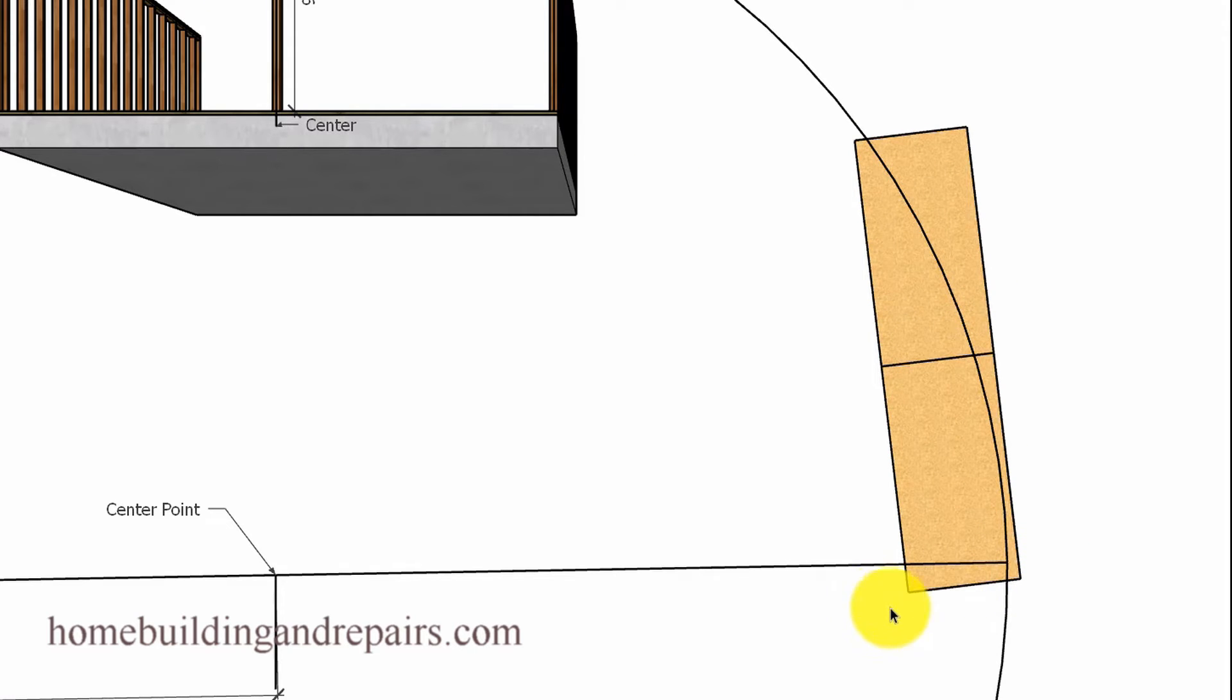The next thing we're going to want to do is hook our tape measure over the pivot point or the center. And this is usually going to be a screw or a nail fastened into something. And you're going to need a flat surface.